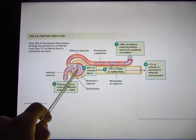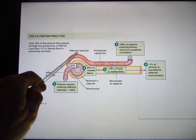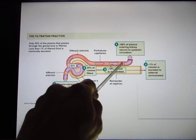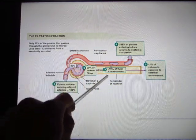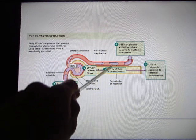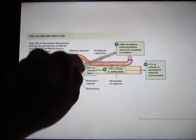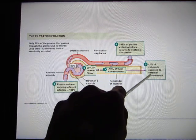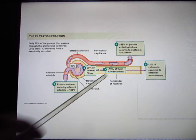100% of blood goes to the glomerulus, but only 20% is cleaned. The other 80% goes through the efferent arteriole to the peritubular capillary and is processed over and over — 99% of filtered material is taken back. So your kidney filters about 180 liters of blood a day, but you actually create less than 2 liters of urine per day — less than 1%.